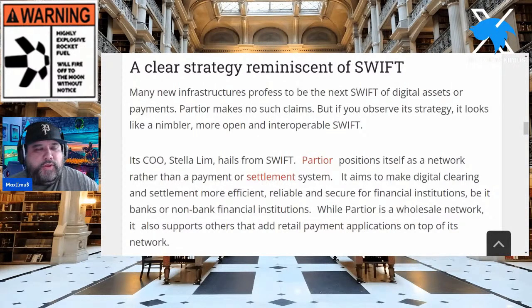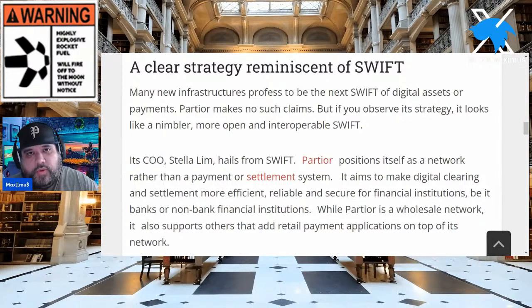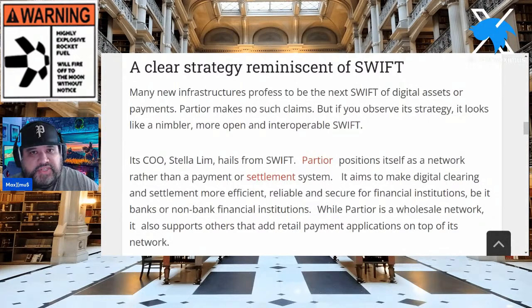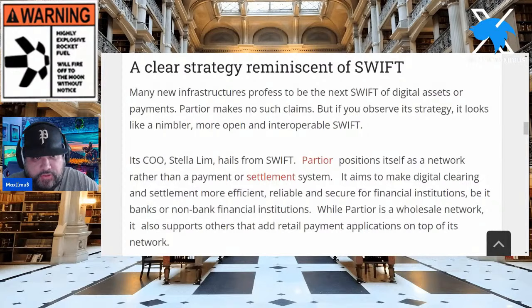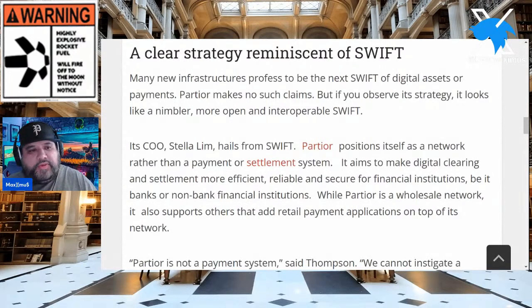What about the argument that some players are literally going to replace SWIFT? Could this very well be the answer? We may finally have a solid example with proof of something replacing SWIFT. You may say this is still not proof — that's okay. But here's the article: 'A Clear Strategy Reminiscent of SWIFT.' Many new infrastructures profess to be the next SWIFT — Partior makes no such claims — but if you observe the strategy, it looks like a nimbler, more open, and interoperable SWIFT.